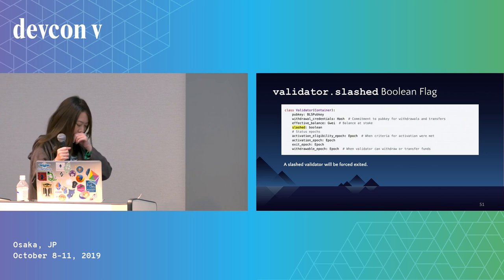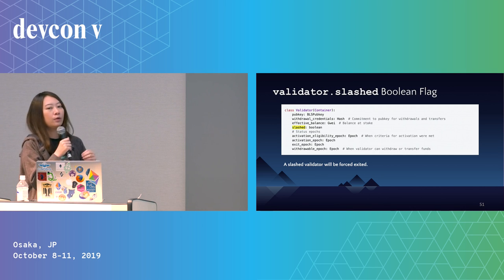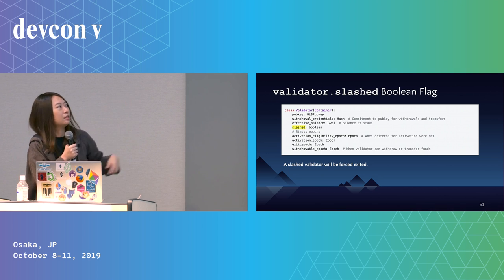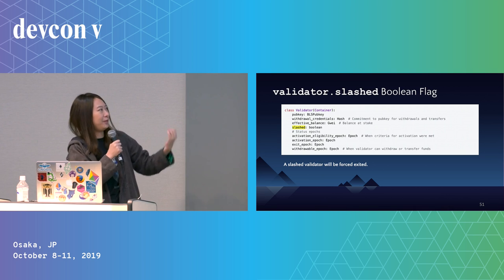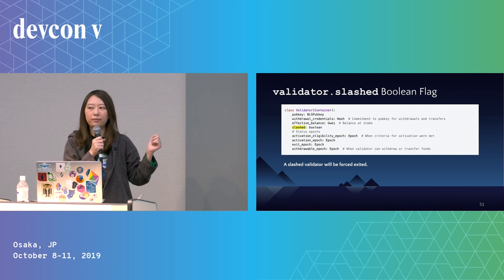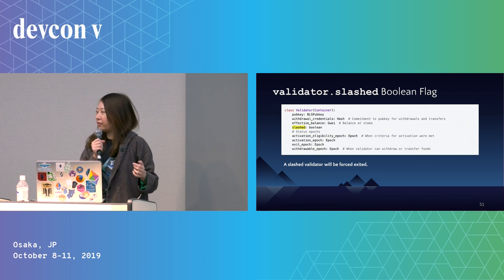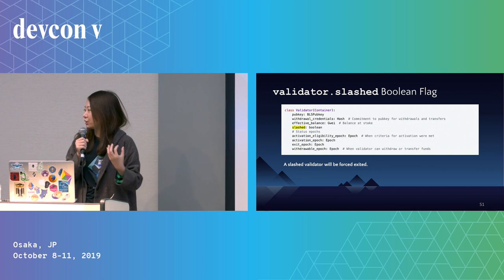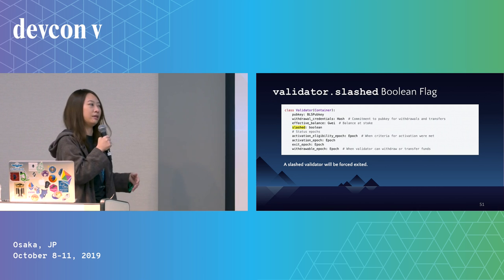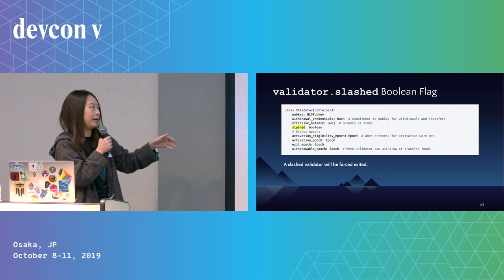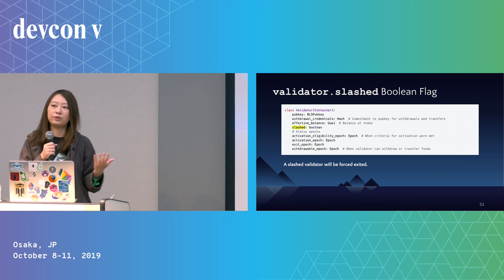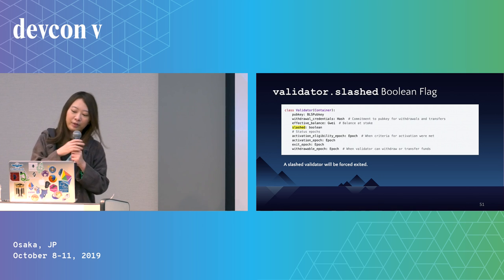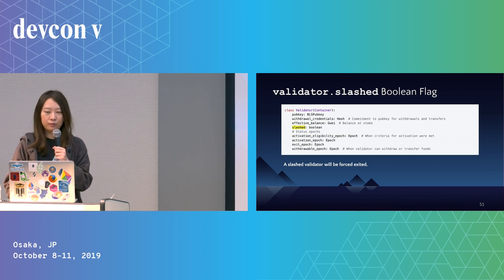There's another flag — another factor affecting the beacon chain validator state — which is called 'slashed.' A slashed validator will be forced to exit, which is reasonable because they may have misbehaved. Danny will talk about how validators get slashed in a later session.